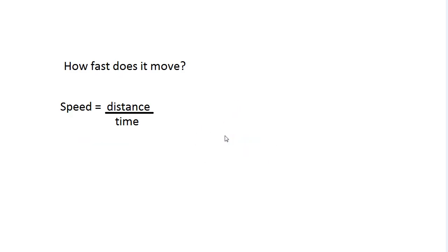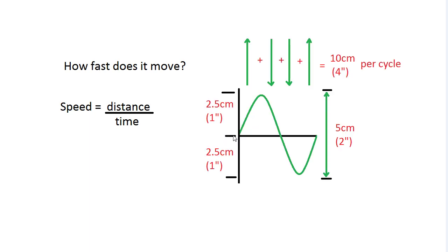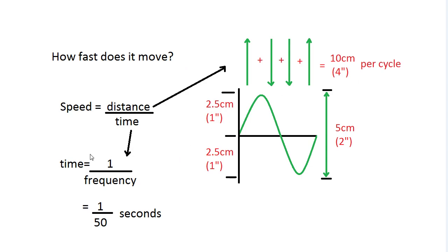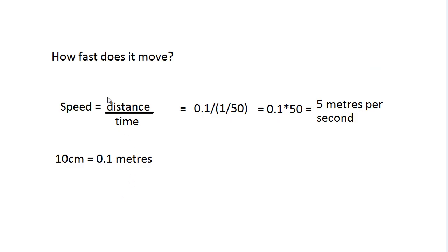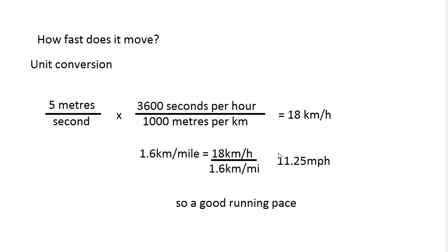For the first equation, speed equals distance over time. To find the distance: the cone moves one inch out, one inch back to the middle, one inch in, then one inch back to the middle — totaling four inches or ten centimeters per cycle. Time is the inverse of frequency, so time equals one over 50 seconds. Plugging into the equation: 0.1 divided by 1/50 equals 5 meters per second — relatively fast.